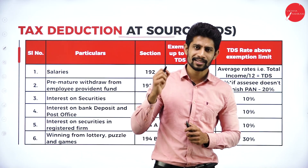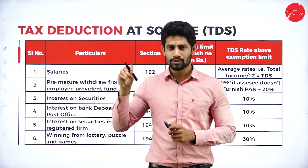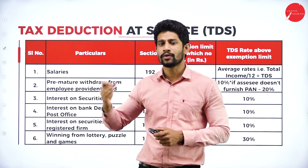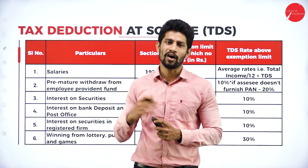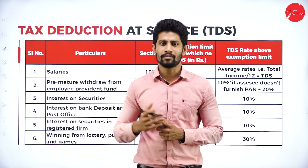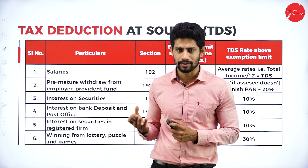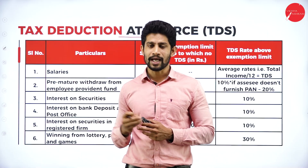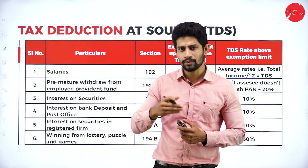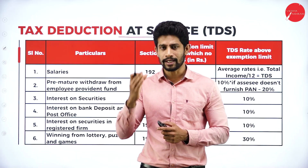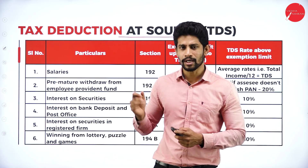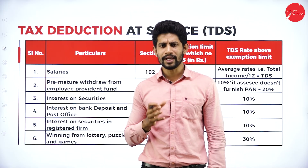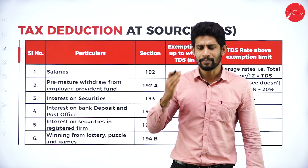TDS is nothing but tax deducted at source — from whichever source you earn income, the tax is deducted there itself and the remaining amount is credited to your account. For example, if you go to a club and win 50,000 rupees, they will not give you the full 50,000. They deduct 30 percent tax of 15,000 rupees and pay you the remaining 35,000. So they are deducting the tax at the source of income itself and paying you the remaining amount.